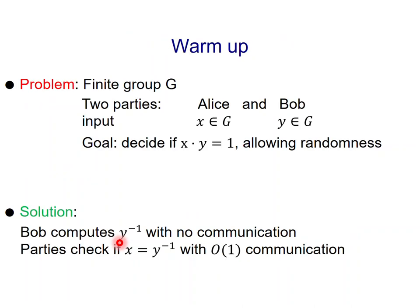But for now, we are going to focus on some very concrete problems. As a warm-up, let us consider the problem in which you have a finite group G. You should think of G as being finite but large, so all the results are asymptotic with the size of the group. You have two parties, Alice and Bob. Each party receives an input, so Alice receives X and Bob receives Y. Their goal is to decide if the product of X and Y is equal to 1, and they are allowed to use randomness.